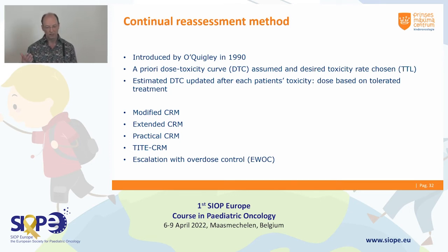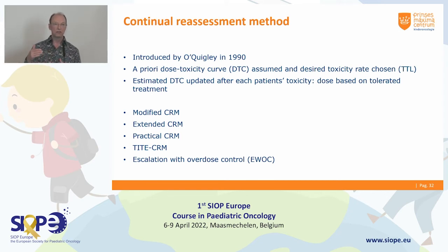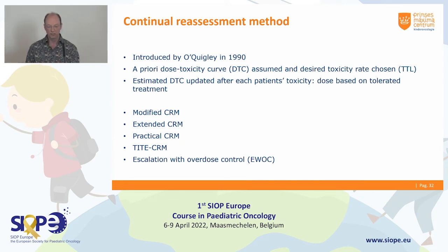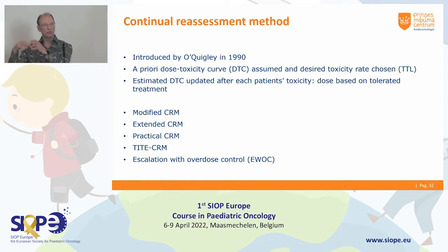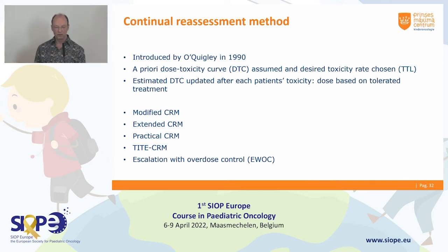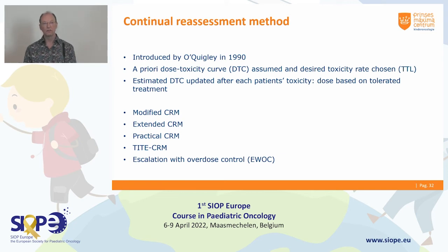There are a number of CRM variants: the modified CRM, extended CRM, and practical CRM. These all have to do with still doing it safely. The modified CRM starts as usual with three patients — because it's the very first time applying a drug to a patient, so you have to be very careful — and then once you find a DLT, this new design kicks in, updating dose-finding patient by patient. The time-to-event CRM (TITE-CRM) is for when the endpoint appears later in time, not necessarily measurable during the first cycle.